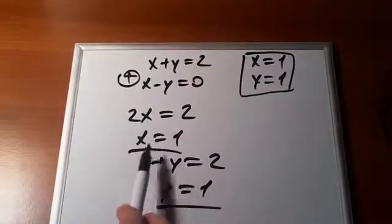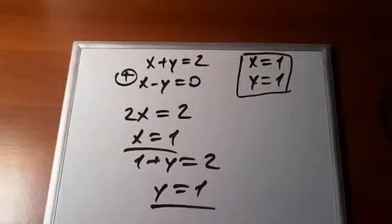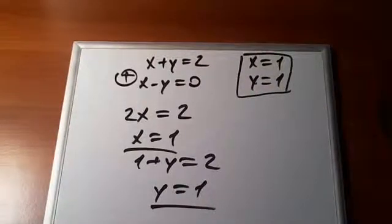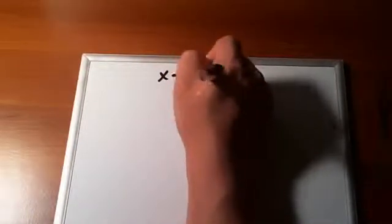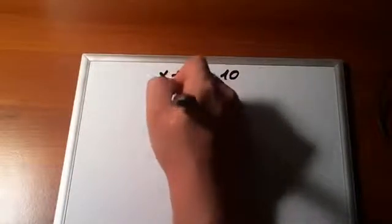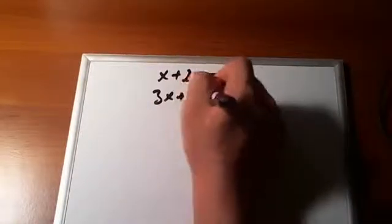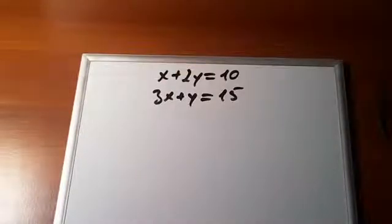As you see, we found that x is equal to 1 and y is equal to 1. We found the same solutions like we found using the first way I showed in the previous video. Now, let's look at the other example. x plus 2y is equal to 10.